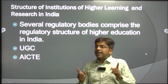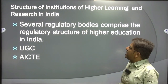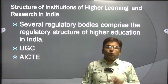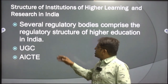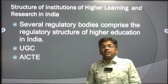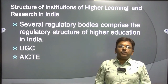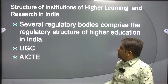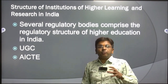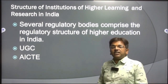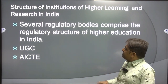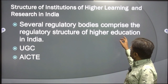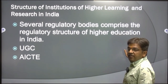Now let's understand the structure of institutions of higher learning and research in India. The first key body is the UGC — University Grants Commission — which regulates all higher education and research. The second is AICTE, the All India Council of Technical Education, with its headquarters in New Delhi. These two are the most important bodies for higher education learning and research in our country.